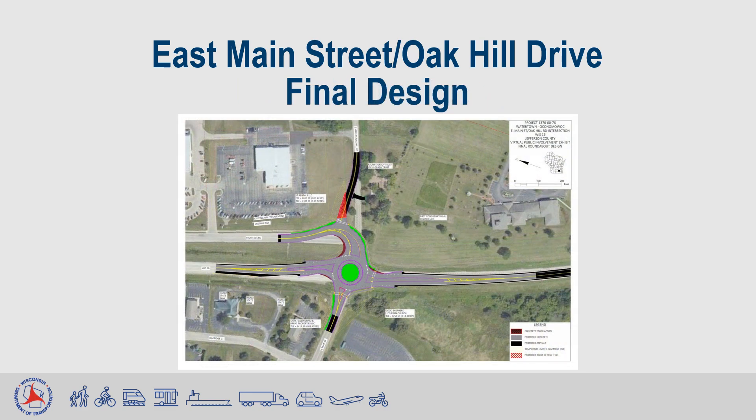As you can see on this slide, the east leg of the roundabout has been reconfigured to direct traffic onto the Frontage Road, and Oak Hill Road has been reconfigured to a new intersection just to the north of the current alignment. Along with this configuration of the roundabout, a concrete truck apron was added to the northeast quadrant of the roundabout to accommodate trucks making a right turn from the Frontage Road onto Westbound Wisconsin 16. The existing sidewalk on the Frontage Road will be extended along the Frontage Road leg of the roundabout to the southeast quadrant, where a crosswalk will be included across the south leg of the roundabout.